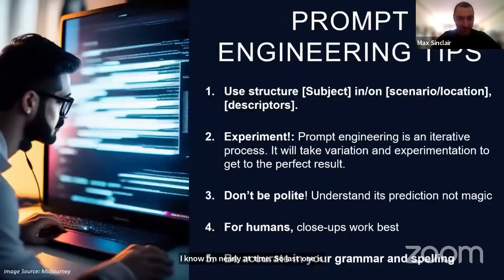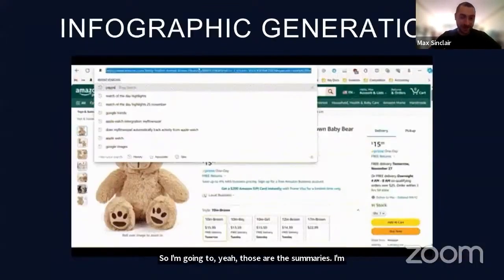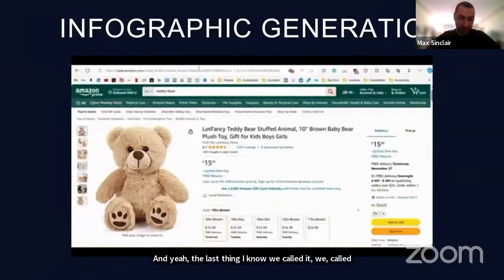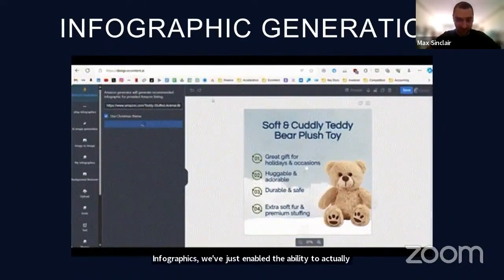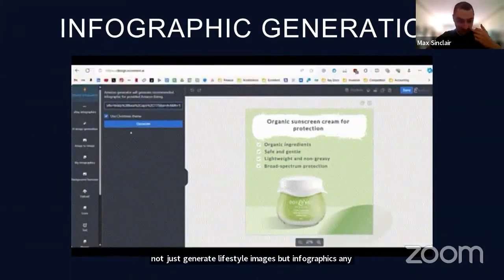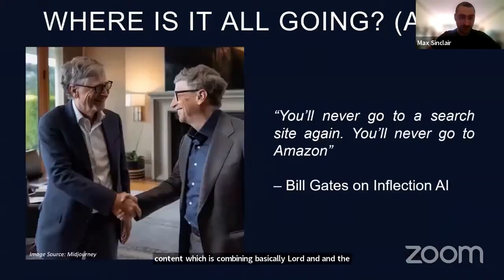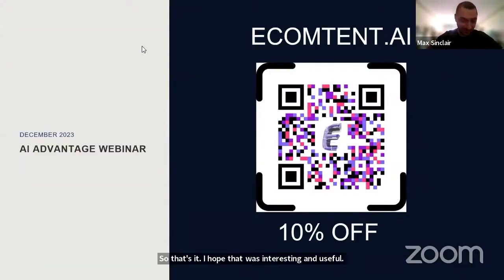The last tip is to check your spelling and grammar. To wrap up: we've just enabled the ability to generate not just lifestyle images but infographics — combining Flair and Stable Diffusion to create beautiful visuals. There's a 10% discount to e-content available by scanning the QR code. I hope that was interesting and useful.